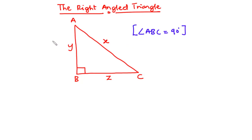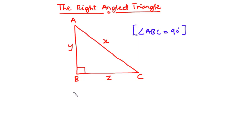To find the length of each side of this right-angled triangle, we are going to use the Pythagorean theorem. The Pythagorean theorem states that for any right-angled triangle, the square of the hypotenuse is equal to the sum of the squares of the other two sides. Thus we have x² = y² + z².